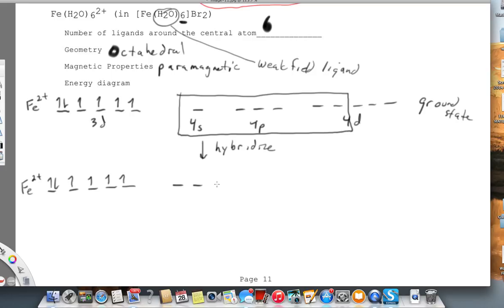We get our 6, 1, 2, 3, 4, 5, 6. This is SP3D2. So this is what we call an outer d-orbital complex. As opposed to the previous example that was inner d-orbital.